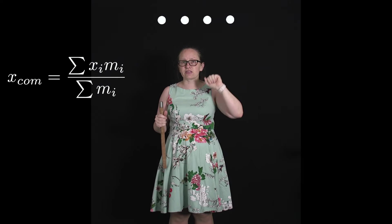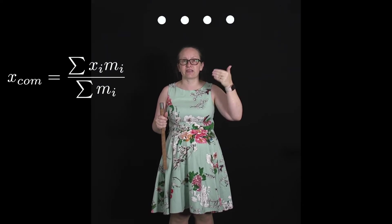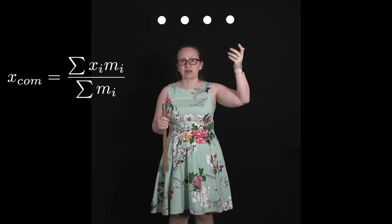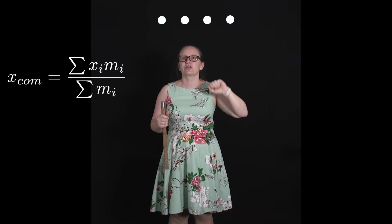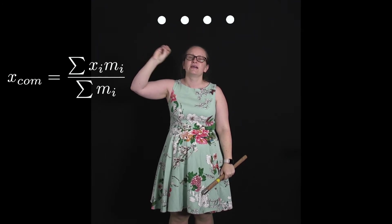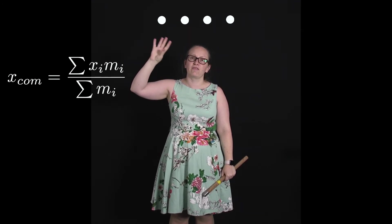The formula to calculate the center of mass in this case is x_com, so we'll represent center of mass with a little subscript c-o-m, and x because it's a position. That is equal to the sum of x_i m_i divided by the sum of m_i.